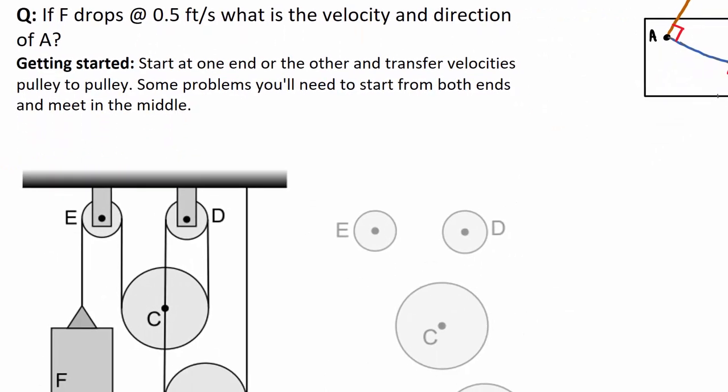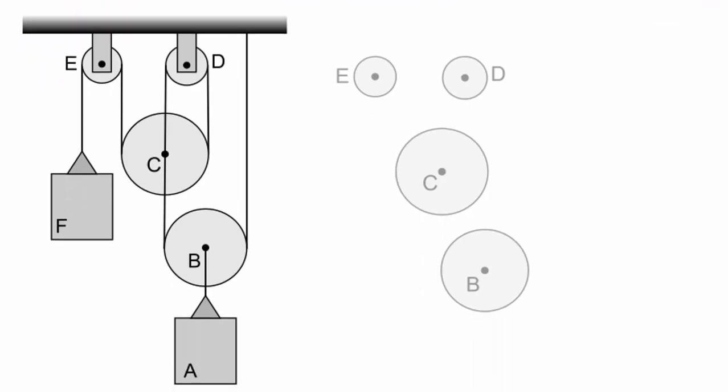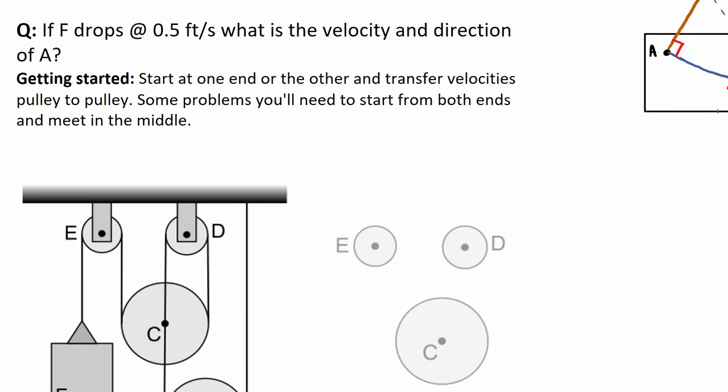We have a pulley system where F is going to drop at a half foot per second. And we're curious what's going on here with A. Essentially, what's the ratio of motion between F and A? Now with the constraint systems, we know that the ratio of velocity between F and A is the same as the ratio of displacement between F and A and is also the relationship or the ratio between the acceleration of F and A. That that ratio is equal for all of those. And so thinking about how we get started, we're going to start at either one end or the other and transfer velocities from pulley to pulley.